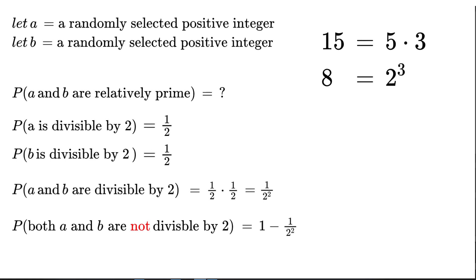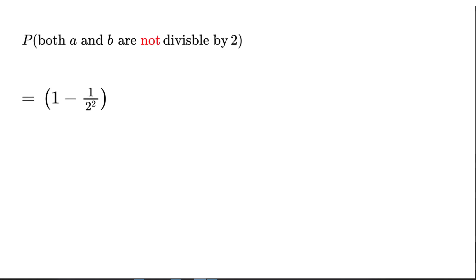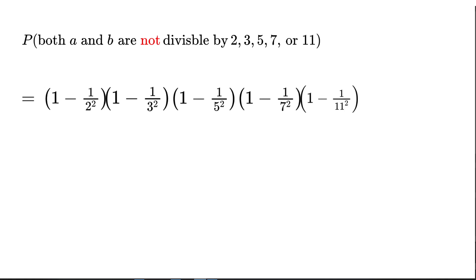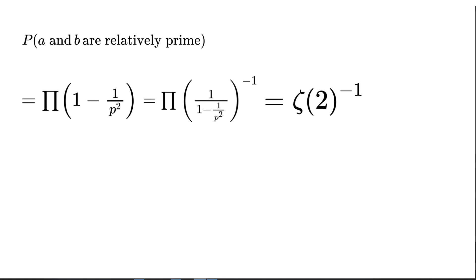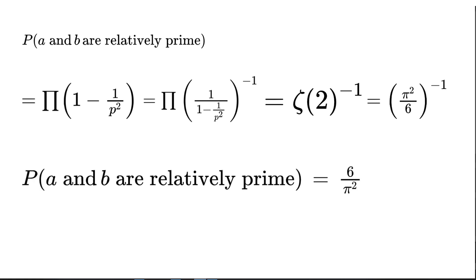We can see this follows the same pattern with being divisible by 3, 5, and so on. So the probability that a and b are not divisible by 2 or 3 is found by multiplying (1 − 1/2²) by (1 − 1/3²), carrying this on with divisibility by 5, 7, 11, and so on. When carrying this on forever, we can rewrite this as an infinite product of (1 − 1/p²), where p is the prime numbers going from 2 to infinity. This is the reciprocal of Euler's product formula for the zeta function evaluated at s = 2. Since zeta(2) = π²/6, the reciprocal is 6/π², and thus the probability of two randomly selected positive integers being relatively prime is exactly 6/π².